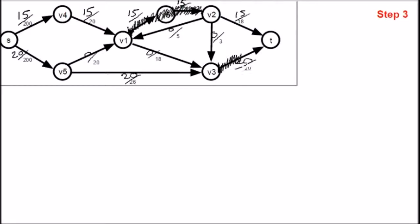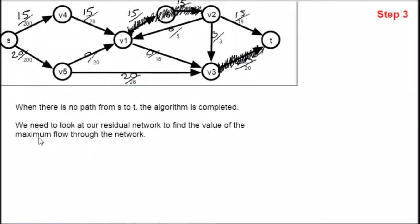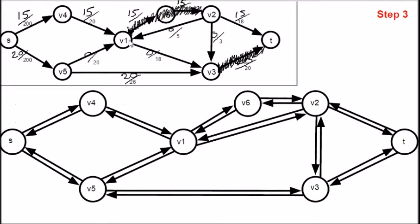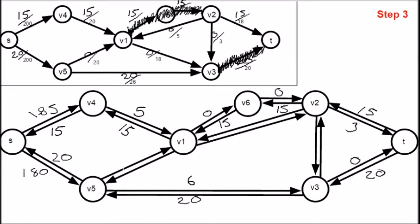From this, we need to choose the next shortest path from S to T. You can see we now can't take either of these two edges, because we are already pushing the maximum flow. We can't take this edge from V3 to T, because we are already pushing the maximum flow, which means there is actually no path from S to T. When there is no path from S to T, the algorithm is completed. We now need to look back at the residual network to find the value of the maximum flow. To find the maximum flow, we need to see what is either coming out of the sink or into the source. Out of the sink, we have 15 and 20. This means our maximum flow is 35.